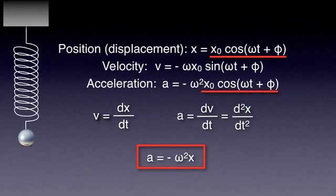Comparing the displacement and acceleration equations, we can write a equals minus omega-squared times x. This tells us that for a harmonic oscillator, the magnitude of acceleration is proportional to the displacement, but the two vectors have opposite directions — which is expected, as the restoring force and displacement are proportional and in opposite directions.